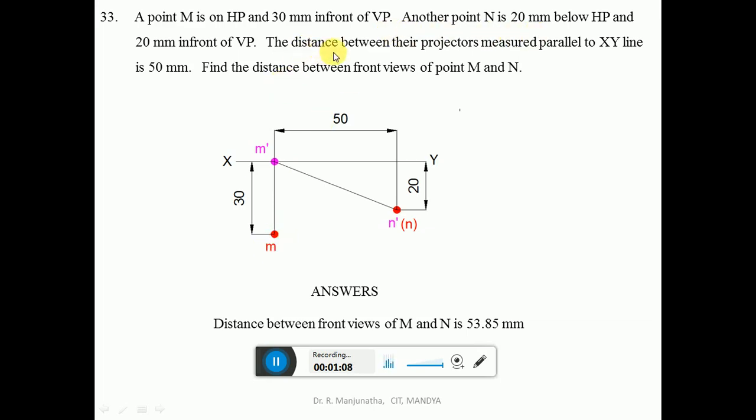The distance between the projectors measured parallel to X, Y line is 50 mm. From the projector M, you measure the distance of 50 mm and draw one more vertical projector here, which will be 50 mm.